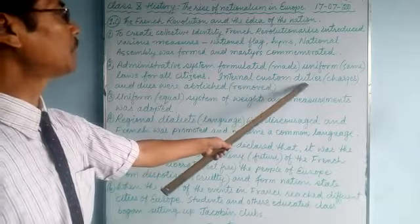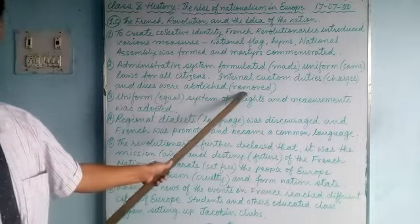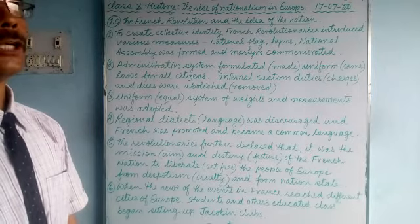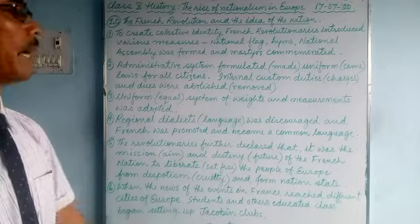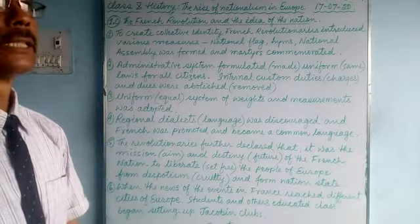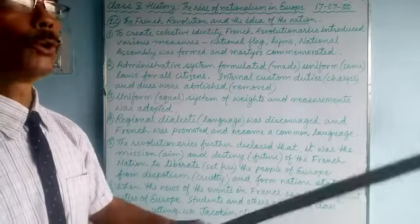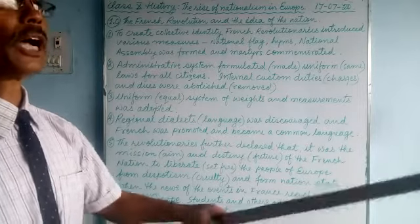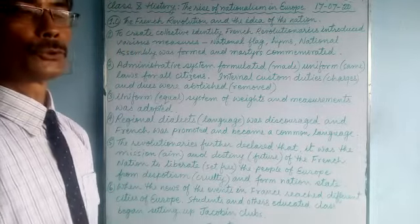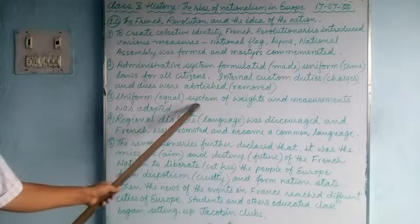Internal custom duties and dues were abolished — abolished means removed. People who had taken loans from landlords and moneylenders had those dues removed. Traders who moved goods from one place to another used to be charged at various points, so those internal custom duties were removed as well.